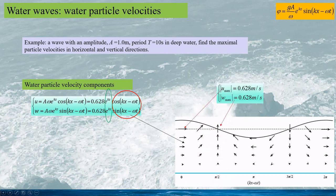Thus the maximum velocity components happen at the free surface. In this case, the maximum horizontal velocity component corresponds to the wave peak or trough, and the maximum vertical velocity corresponds to the wave phase at zero crossing.